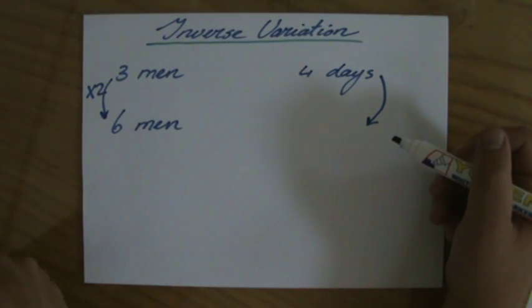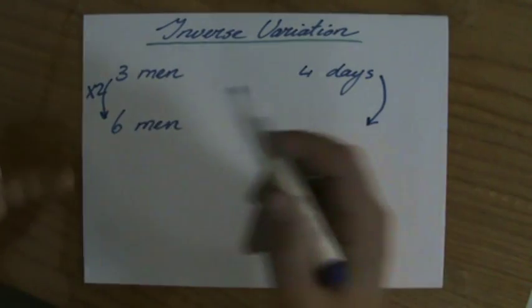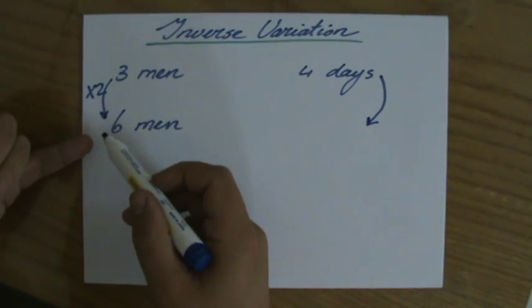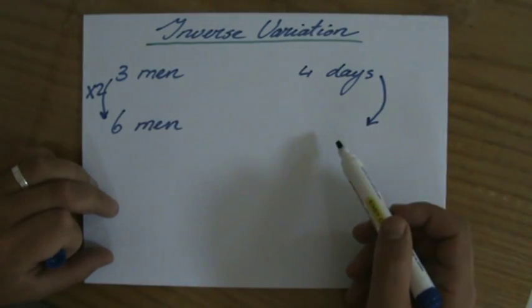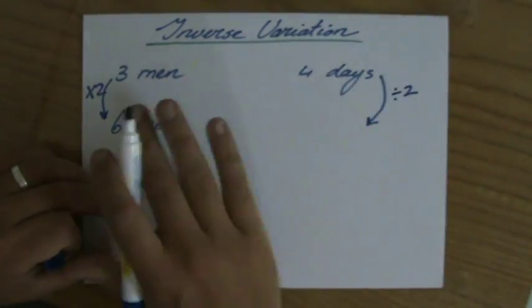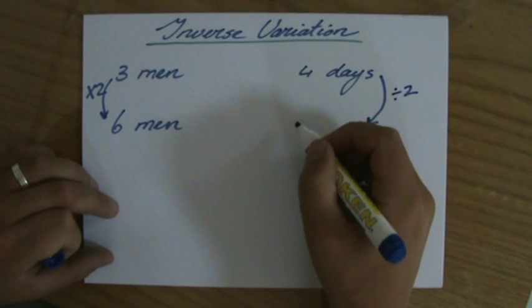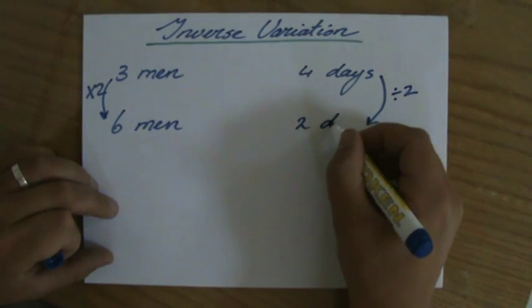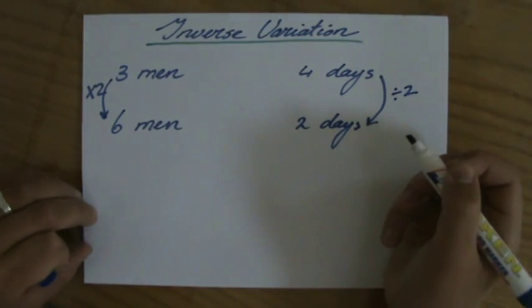Now I hope by using your common sense you realize if that is multiplied by two, it's not going to take twice as long. No, contrary, you do the inverse operation in inverse proportion, so it's going to only take them two days to paint the house.